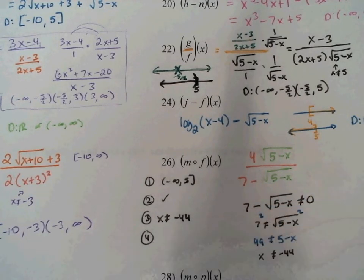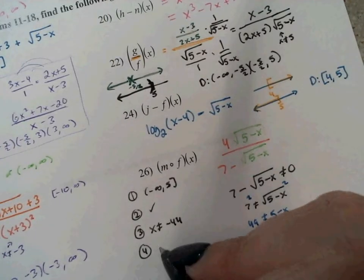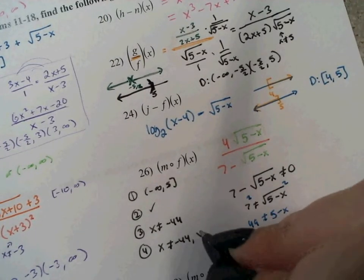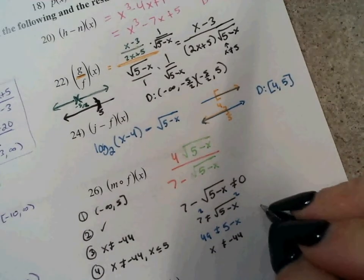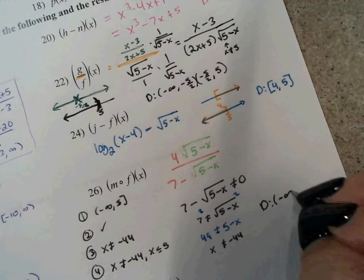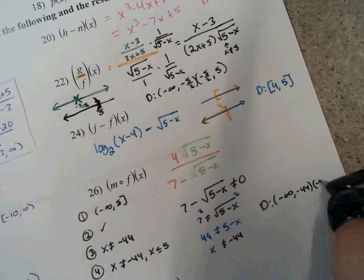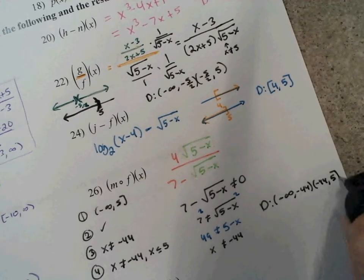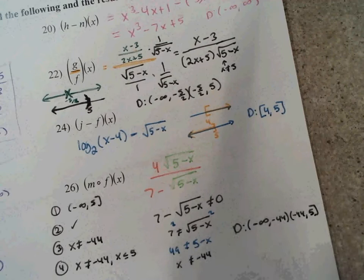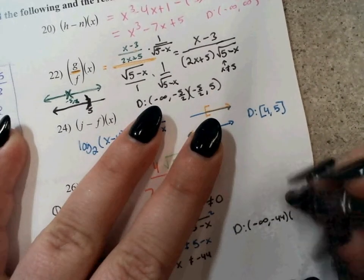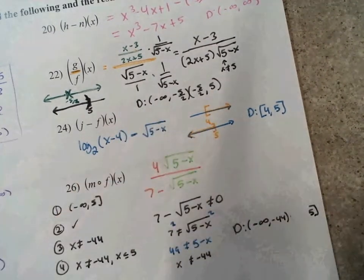Step 4: put the two restrictions together. x cannot equal negative 44, and x must be less than or equal to 5. So my final domain is negative infinity to negative 44, and then negative 44 to 5.